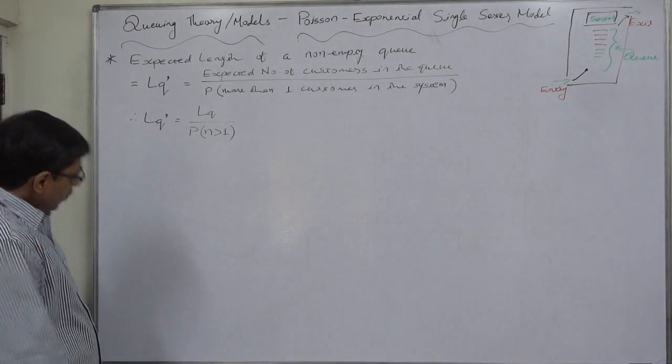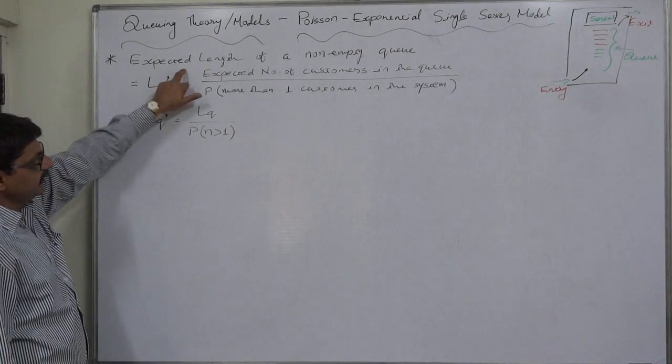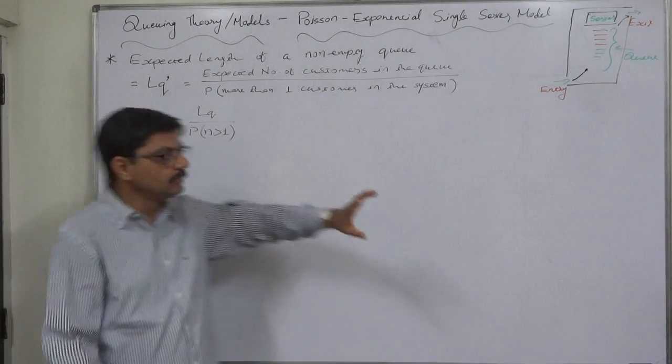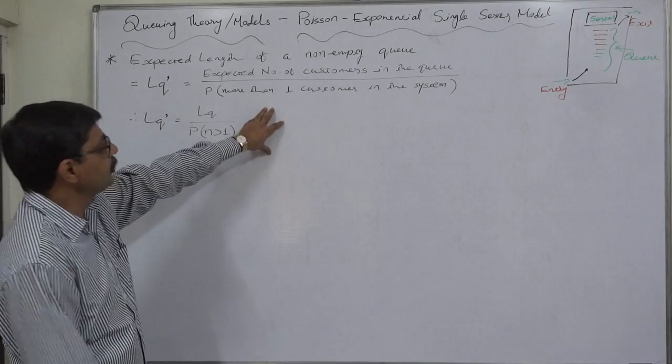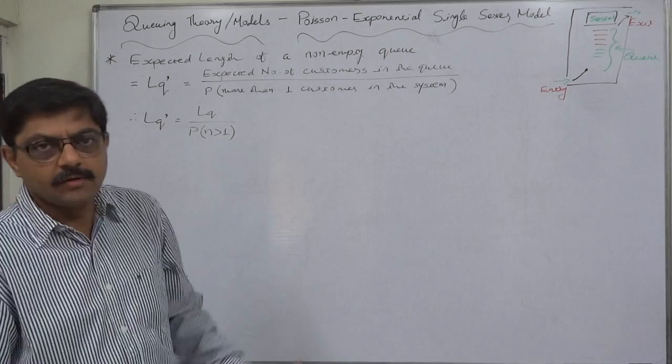The logic or formula for expected length of a non-empty queue is expected number of customers in the queue divided by probability of more than one customers in the system, because a queue will be there only if there are more than one customers in the system.